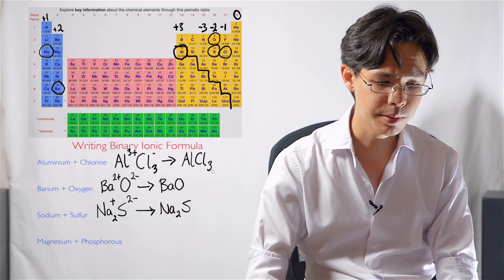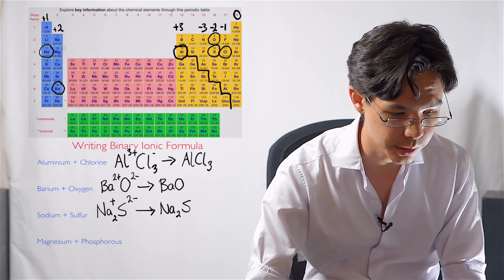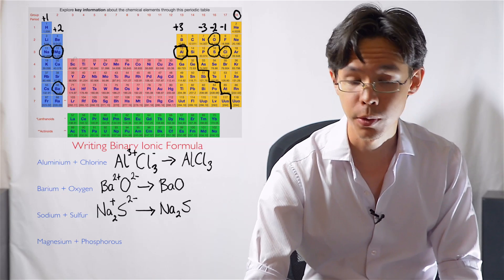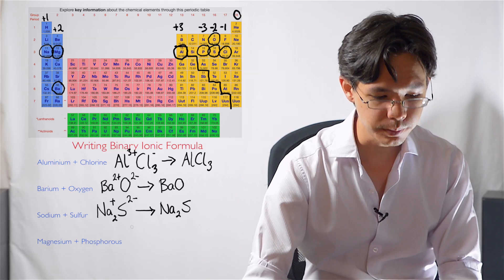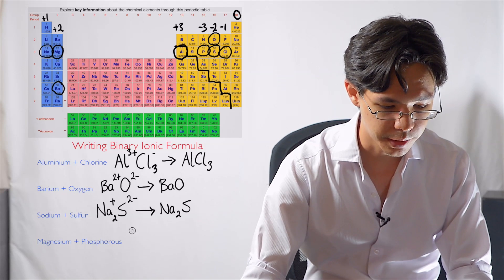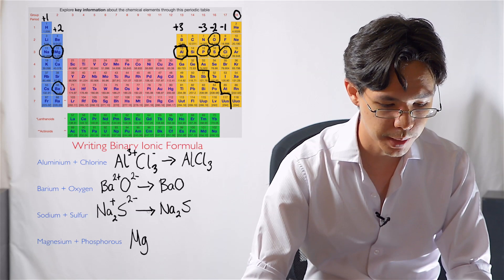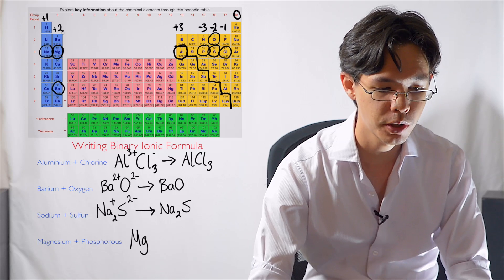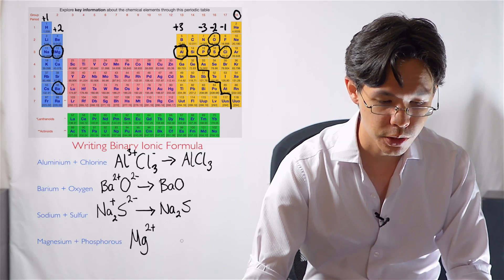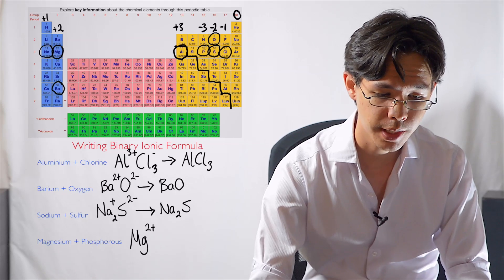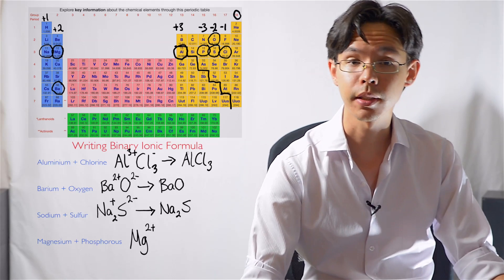The next example, we've got magnesium and phosphorus. We're looking for magnesium. Here's magnesium. It lives in group two. And phosphorus lives over here in the table. So we write down our working again. So magnesium group two, therefore, positive two charge. And we have phosphorus, which lives over here in the right hand side of the table. So that's going to be a negative three charge.